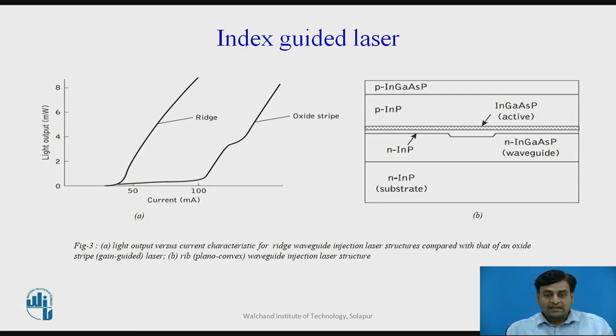Strong index guiding along the junction plane can provide improved transfer mode control in injection lasers. This can be achieved using a buried heterostructure device in which the active volume is completely buried in a material of wider band gap and lower refractive index.